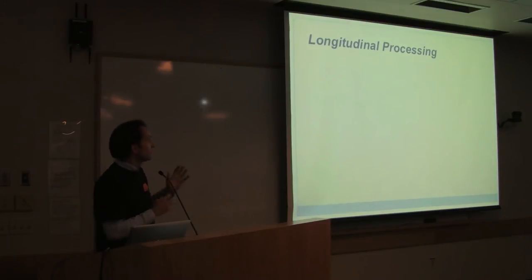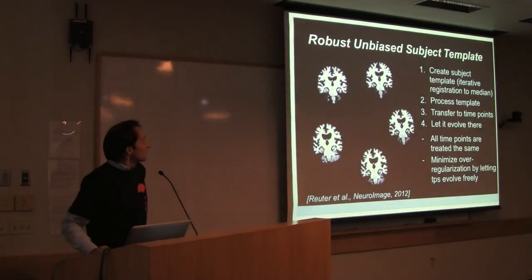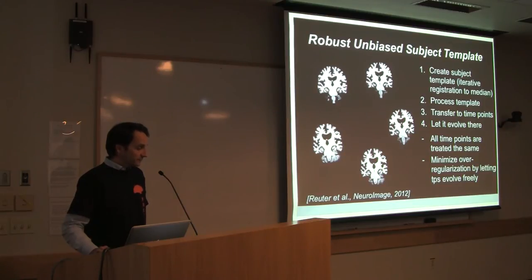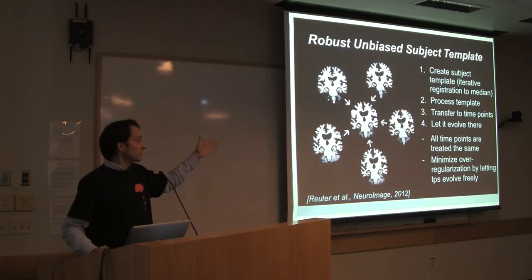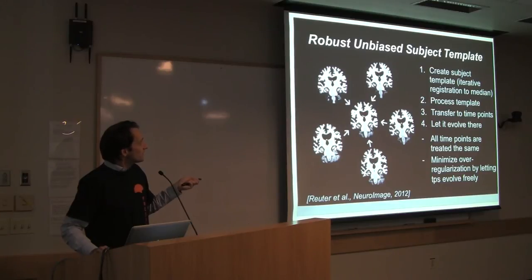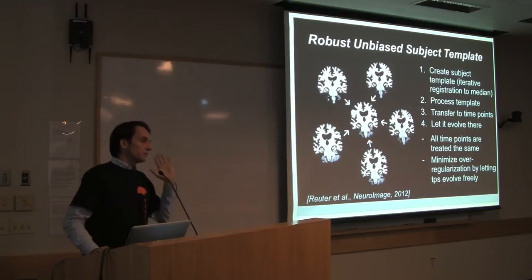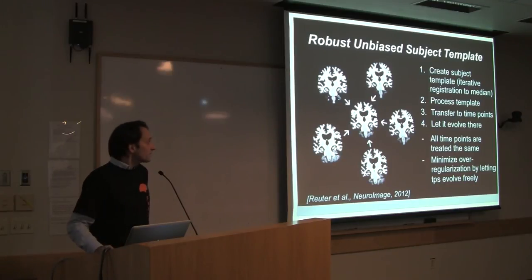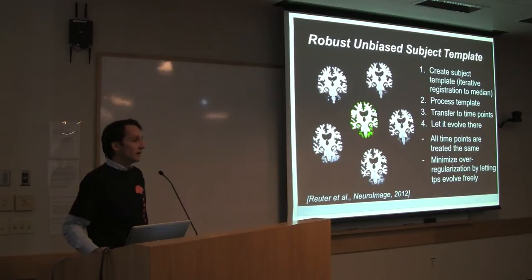Now we'll talk about actual longitudinal processing. The idea involves several steps. First, we create the subject template iteratively — this averaging and re-registering produces a mean image in the middle space. If one time point is tilted one way and another is tilted differently, the template will be approximately straight. Then we process this template through FreeSurfer to get surfaces and segmentations.